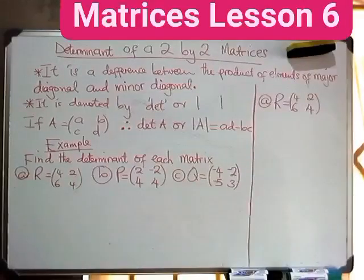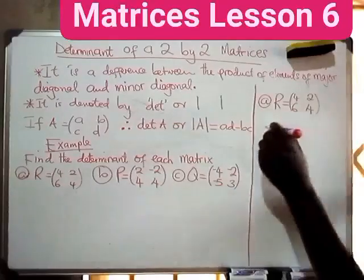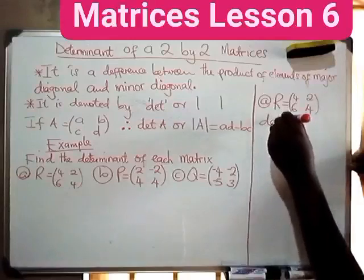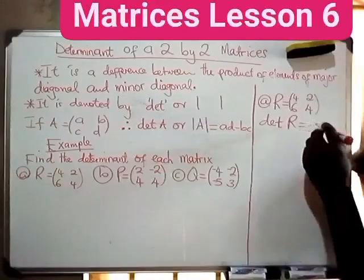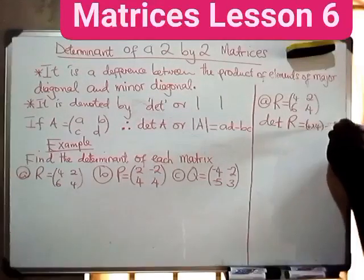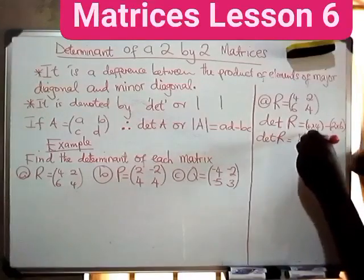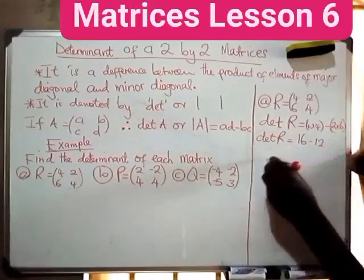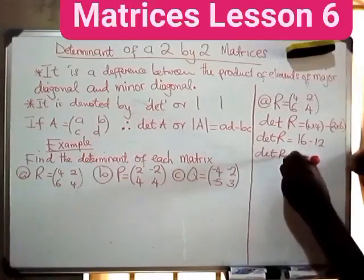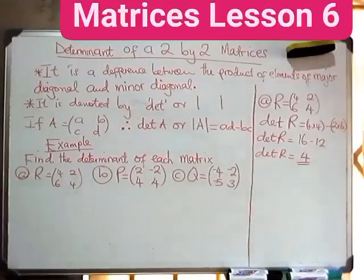Example A: matrix R is equal to the first row 4, 2 and the second row 6, 4. The determinant of R equals the product of the major diagonal — 4 multiplied by 4 — minus the product of the minor diagonal — 2 multiplied by 6. So det R equals 16 minus 12, which gives us 4.